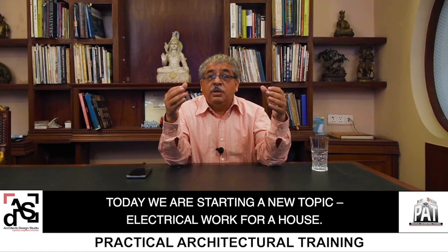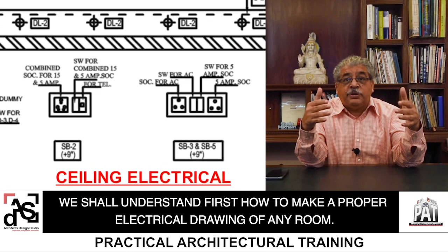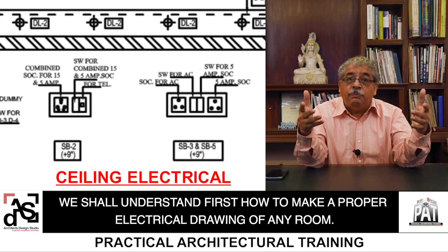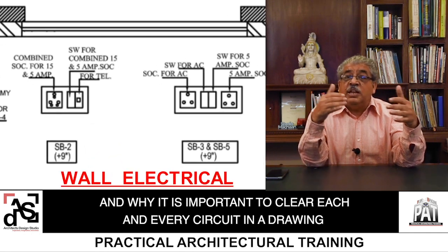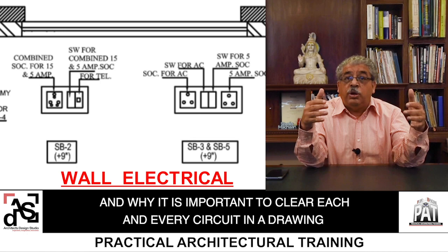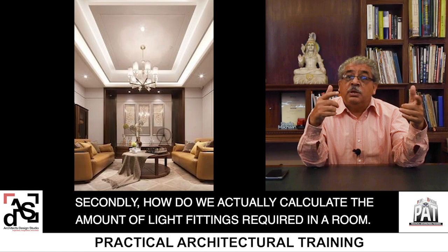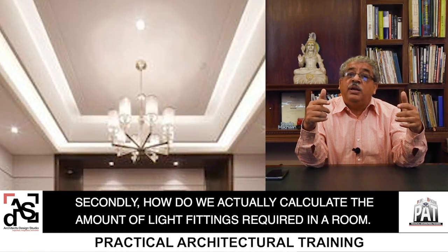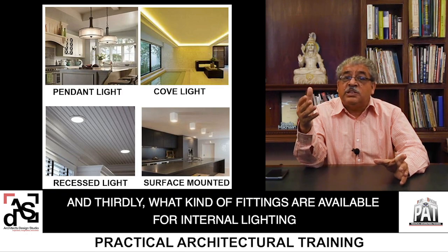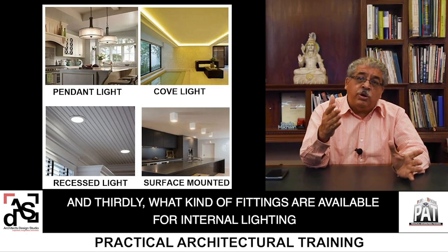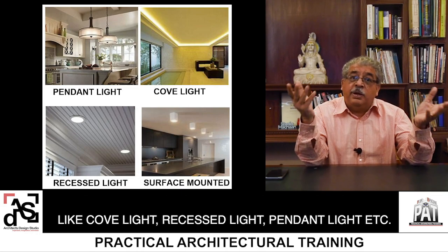We shall understand, first, how to make a proper electrical drawing of any room and why it is important to clearly show each and every circuit in a drawing. Secondly, how do we actually calculate the amount of light fittings required in a room. Thirdly, what kind of fittings are available for internal lighting, like cove light, recessed light, pendant light, etc.